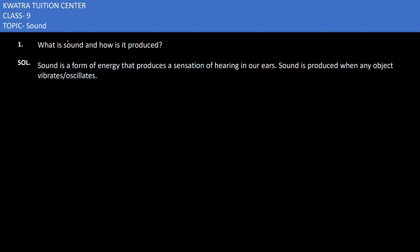Let's start with the first question of chapter Sound in Class 9. The question is: what is sound and how is it produced? Sound is a type